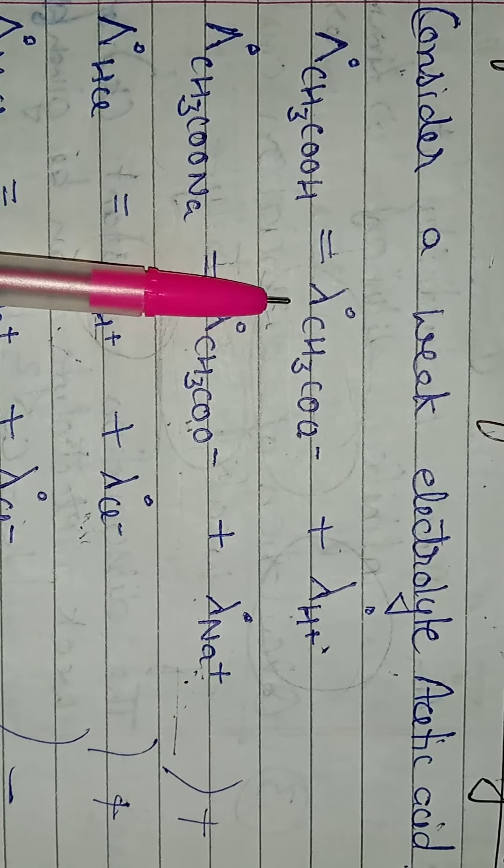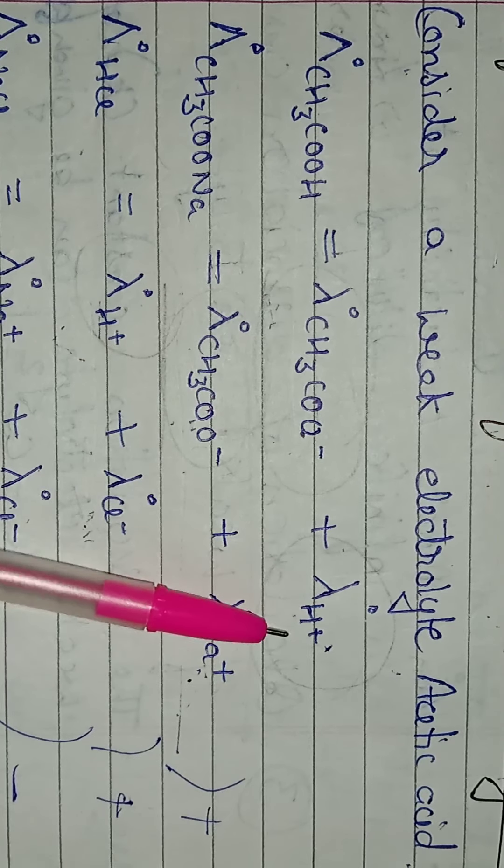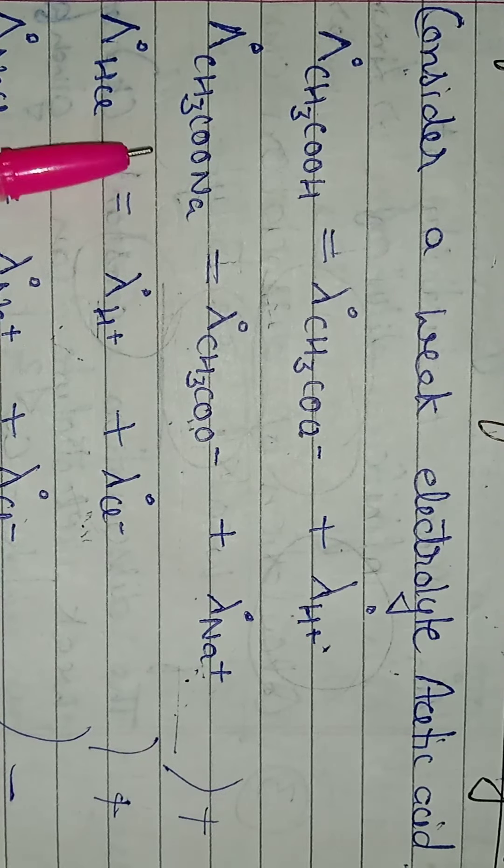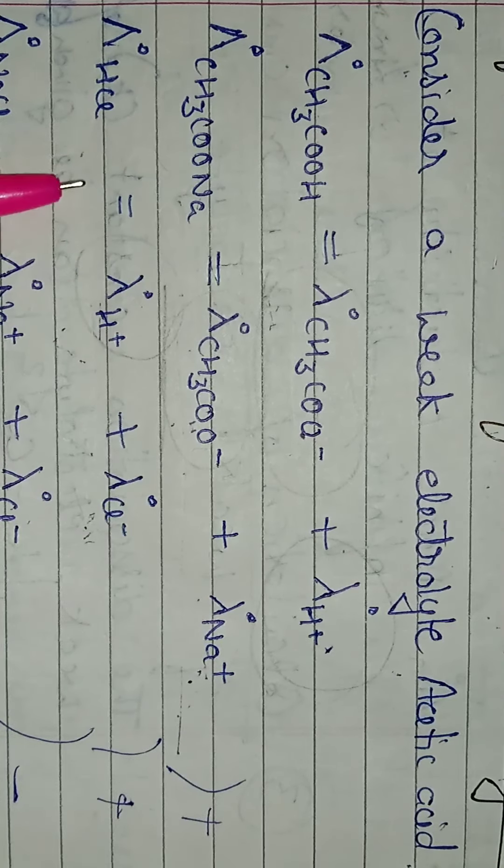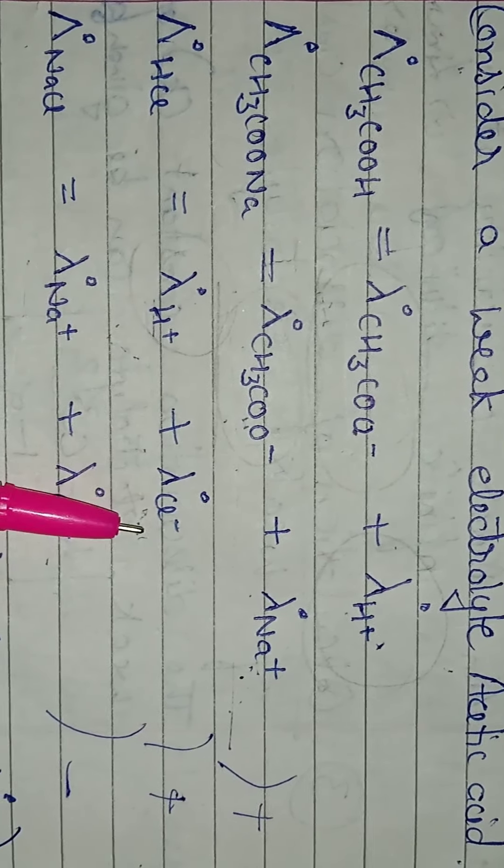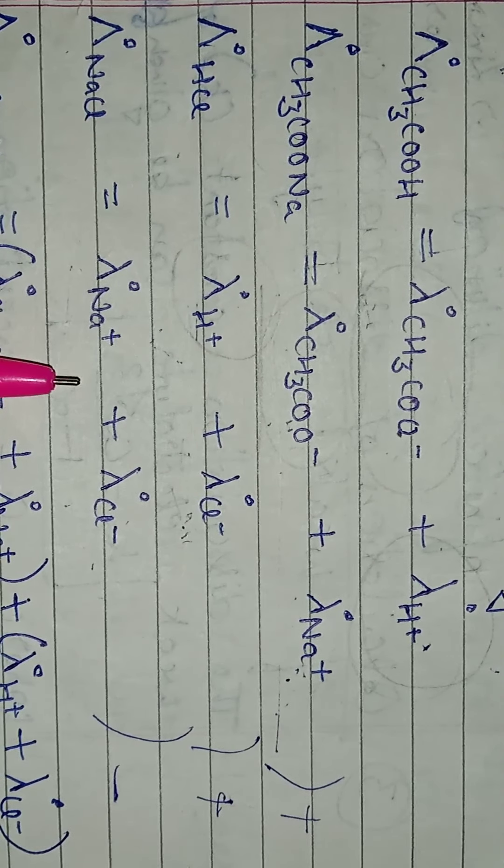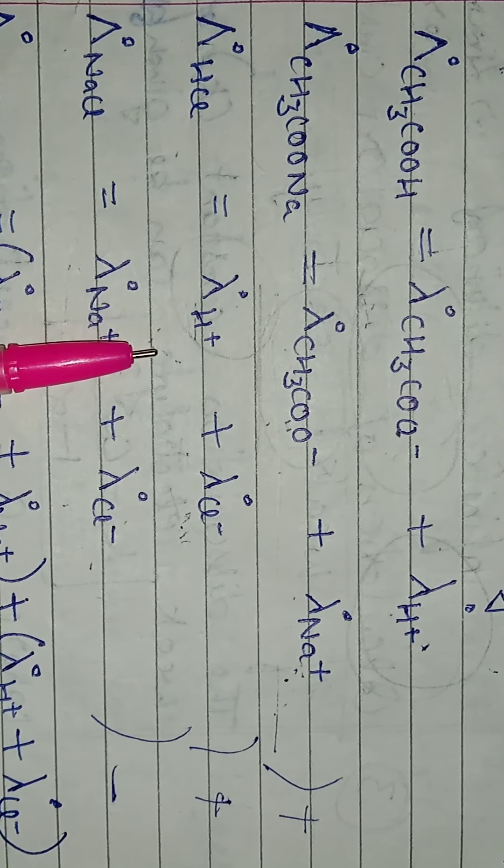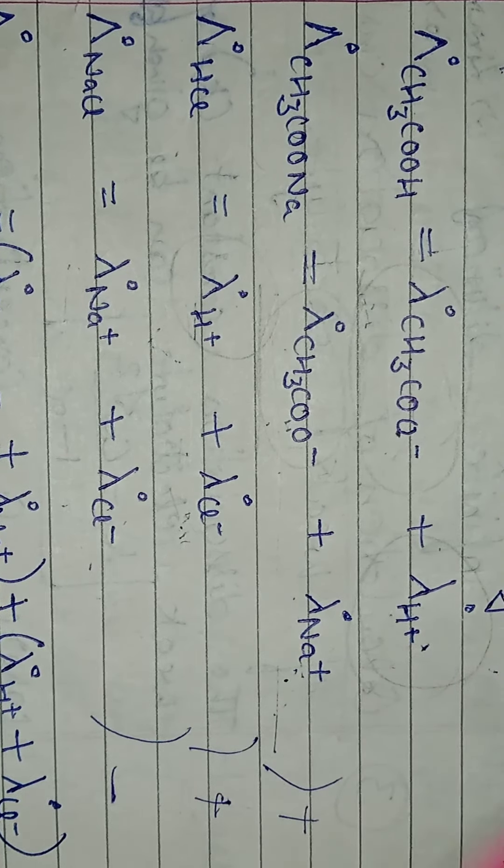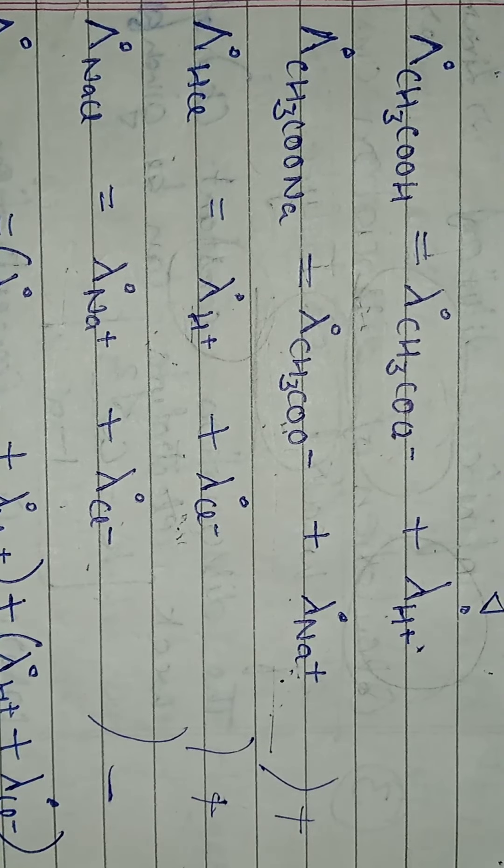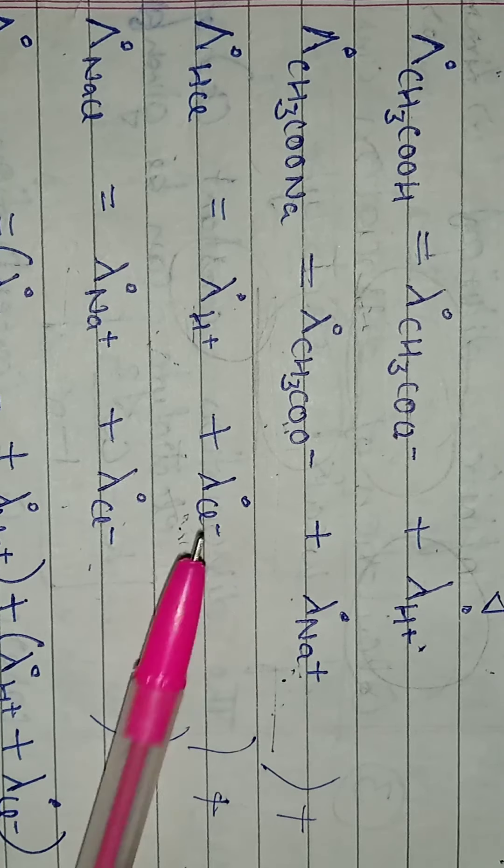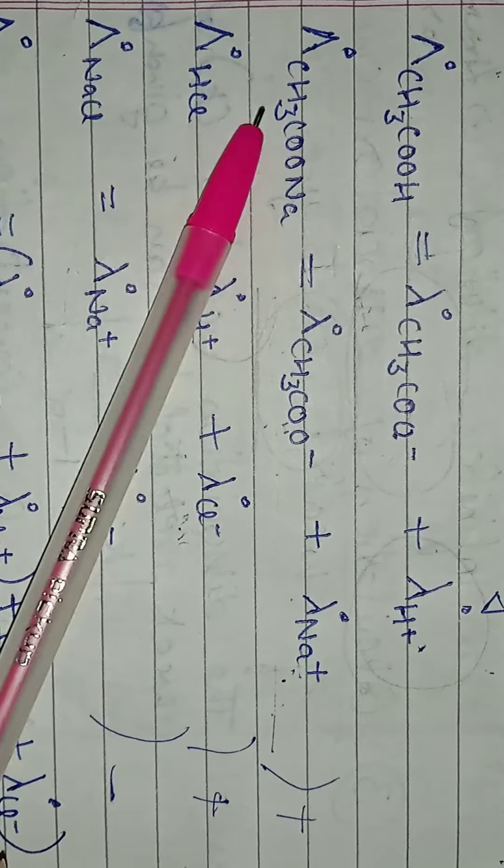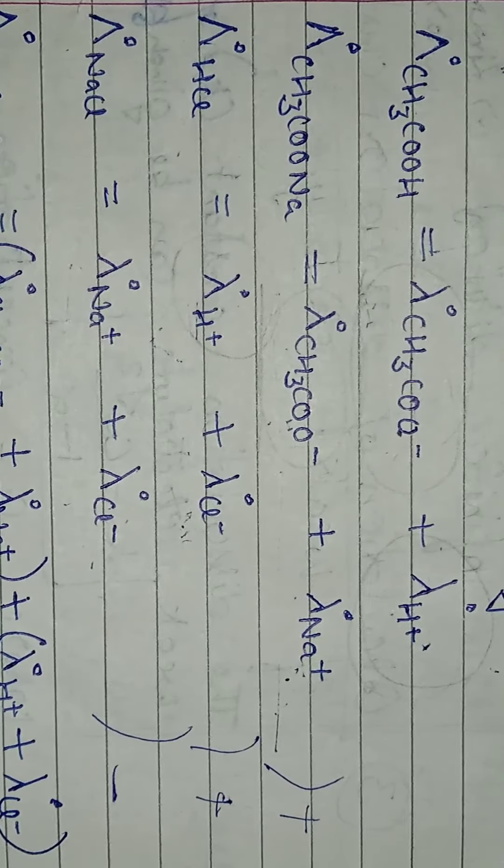Dekhiye, CH3COOH, ismein hai ye bana raha hai, CH3COO negative, aur H positive ka lambda. Abhi ye CH3COONa hai, to CH3COO negative, aur Na positive. HCl hai, to H positive, Cl negative. NaCl hai, to Na positive, Cl negative. Abhi kya karenge, hamein iska nikalna hai na, CH3COOH ka, to hum CH3COONa, in dono ko plus kar denge, aur phir, usmein se, NaCl minus kar denge, to CH3COOH ka aa jayega.